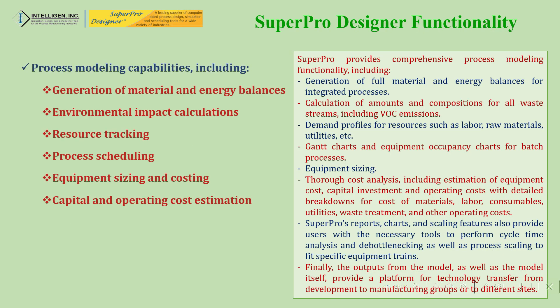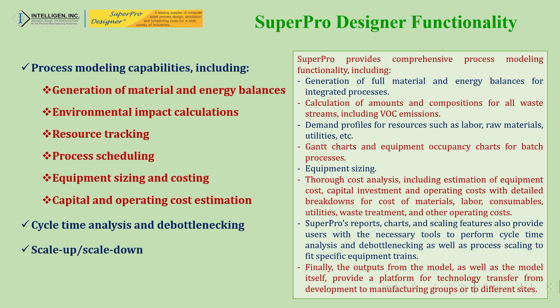When it comes to the functionality of SuperPro Designer, this software is not primarily for academic purposes — it is industrial software used for process development and optimization. However, learning it as a student is a value addition to your CV. In terms of process modeling, it can generate complete material and energy balances across 20 to 30 different unit operations, each with multiple sub-operations. It can also perform environmental impact calculations, assessing what byproducts are released and what impact they cause — essentially life cycle assessment.